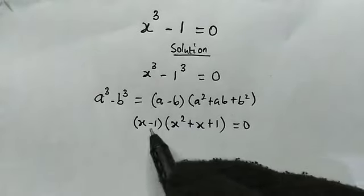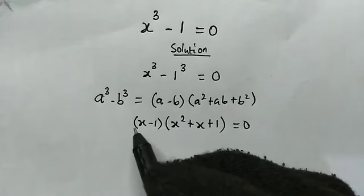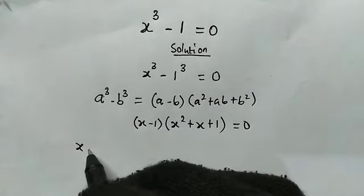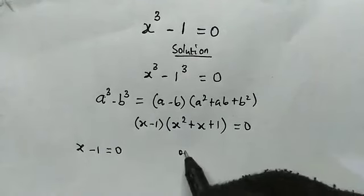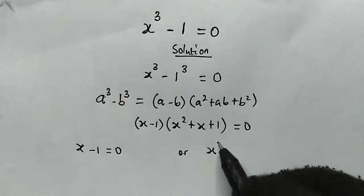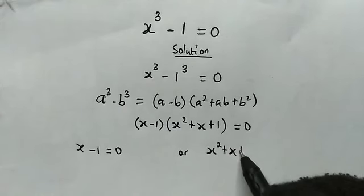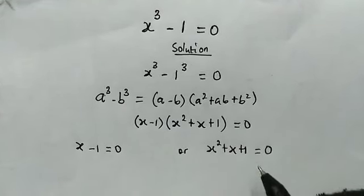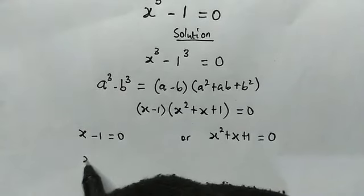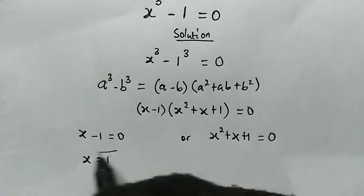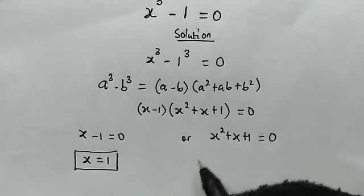So if these two products is equal to 0, we have either x minus 1 is equal to 0, or from this we have x squared plus x plus 1 is equal to 0. So from here we have the real solution that x is equal to 1.